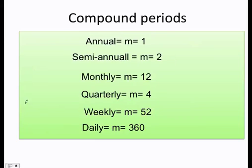When you have compound interest, it's very important you understand this. When it's annually, that means the interest is being compounded once. When it's semi-annually, the interest is being compounded twice, monthly 12, quarterly 4, weekly 52, and daily 360. This is going to be used in a little bit.